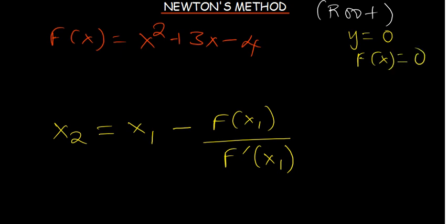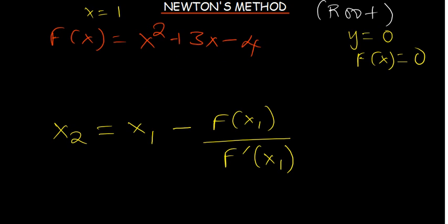Consider the quadratic function f(x) = x² + 3x - 4. If we try x = 1, we get 1² + 3(1) - 4 = 4 - 4 = 0, so we know the root of this function is x = 1. Now let's pretend we don't know the root and apply Newton's method. We'll assume the starting value closer to the root is x₁ = 4.